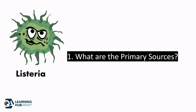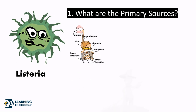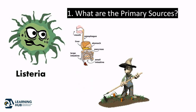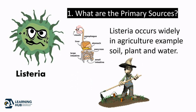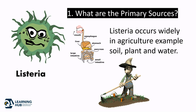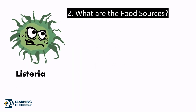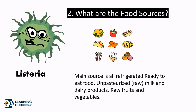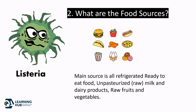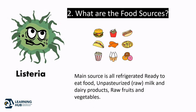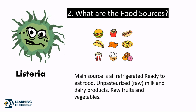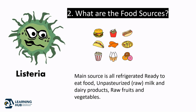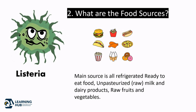Primary source: Listeria occurs widely in agriculture, for example in soil, plant, and water. Food source: The main source is all refrigerated ready-to-eat food, unpasteurized raw milk and dairy products, and raw fruits and vegetables.